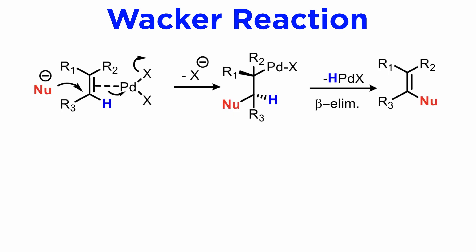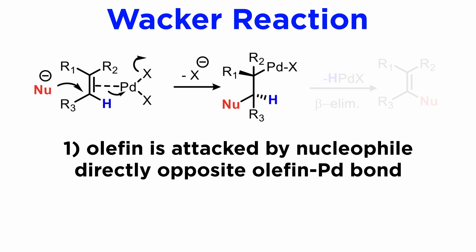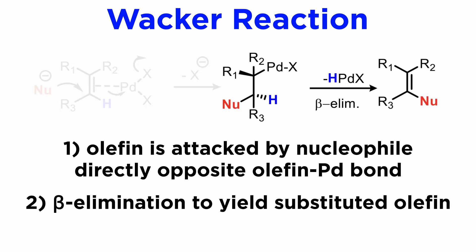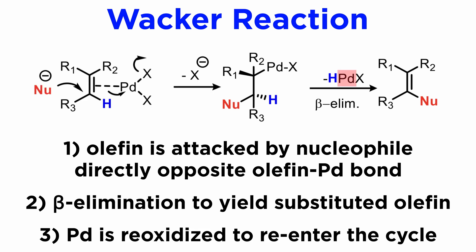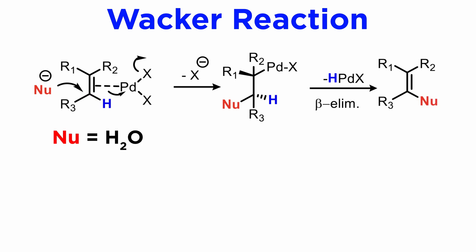We can therefore generalize the Wacker process as follows. The electron-poor olefin is attacked by a nucleophile from the backside of the olefin-palladium bond, yielding an intermediate which can undergo easy beta-hydride elimination to yield a substituted olefin. The palladium then needs to be reoxidized to re-enter the cycle. The net effect is replacement of a C-H olefinic bond with a carbon-nucleophile bond, with retention of configuration at the olefinic carbon if the olefin is substituted.